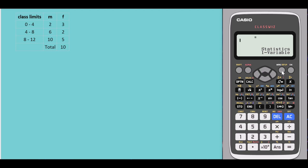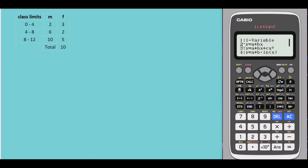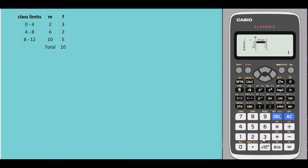Go back to Menu, select six for Statistics, and again select one for one variable — now you see the column for frequency. Input the midpoint data: 2, 6, 10, then move to the frequency column and enter the frequencies: 3, 2, and 5.